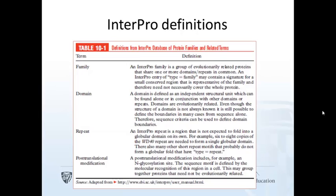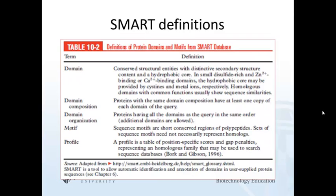Not all databases use their definitions in the same way. InterPro categorizes protein families and notes that families might share domains or other protein signatures. Domains are clearly defined as independent structural units. A repeat might need several copies to make up a single domain. SMART is even more specific on its domain definition: a globular region with a hydrophobic core.